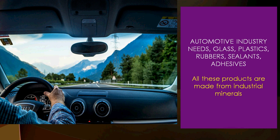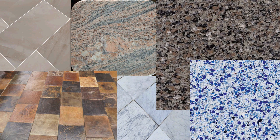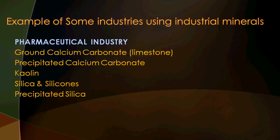In the tile industry — ceramics and porcelain tiles, natural stone tiles like marble and granite, and engineered stone tiles — engineered stone tiles are man-made from quartz powder or silica sand. They are very strong, durable, and aesthetic, though expensive. A wide variety of industrial minerals are used in tile manufacturing. Ceramics and porcelain tiles are basically produced from silica sand, kaolin, ball clay, feldspar, calcium carbonate, and silicon carbonate, among others.